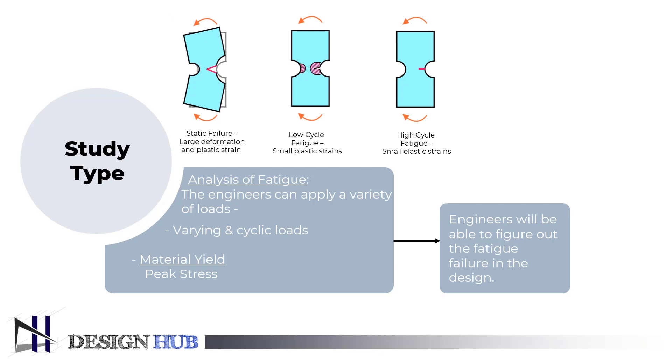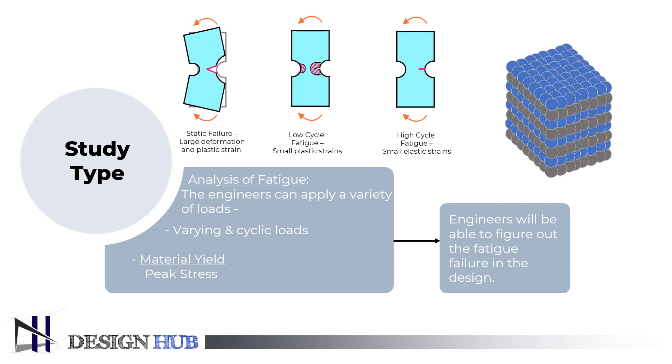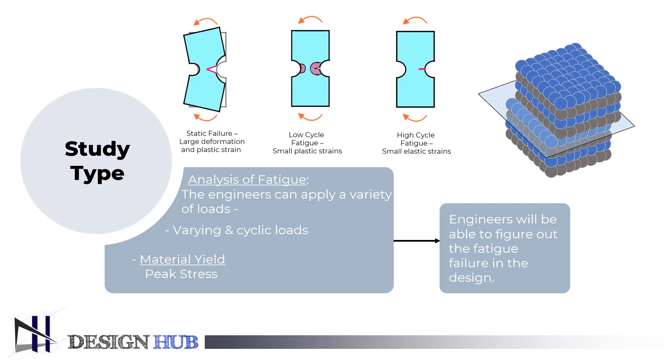Microscopic flaws, dislocations in the crystalline structure of the material, which is typically metal, are the origin of fatigue cracks. The initiation of cracks can be caused by very low stresses. A crack can be started by microscopic dislocations moving forward and backward along the slip plane. This usually happens close to the material's surface.